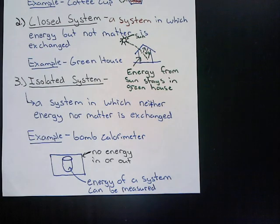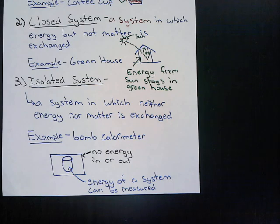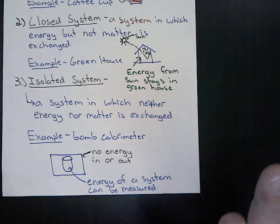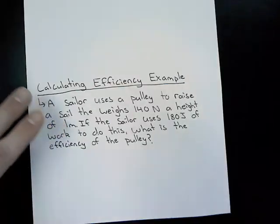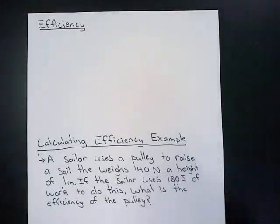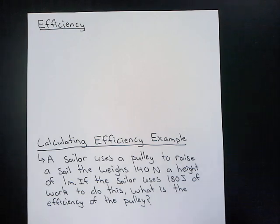So we now have three different systems — open, closed, and isolated — which specify where and how energy can exist or move. Keep that in mind as we move on to efficiency, which is the last part of Section 13.4. Efficiency is basically how well something does work, and the true definition is: the ratio of useful work output to total work input.